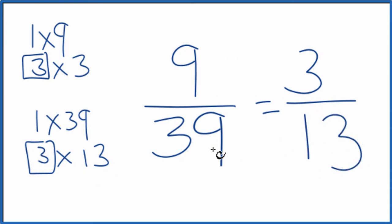So we've simplified 9/39 down to 3/13. And these are equivalent fractions. If you divide 9 by 39 and 3 by 13, you'll get the same decimal value. They're equivalent fractions; we've just reduced or simplified 9/39 down to 3/13.